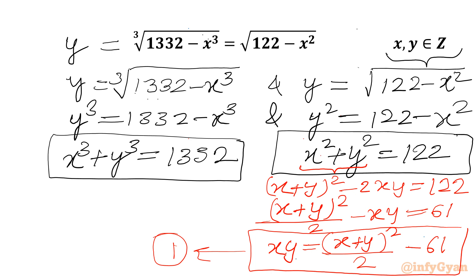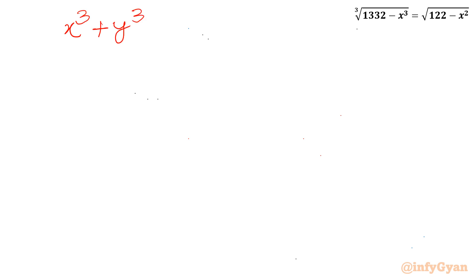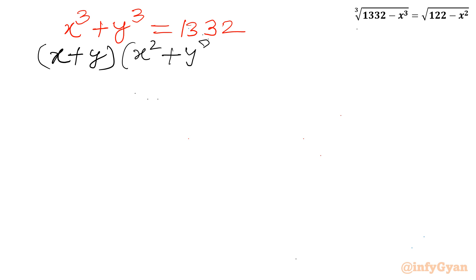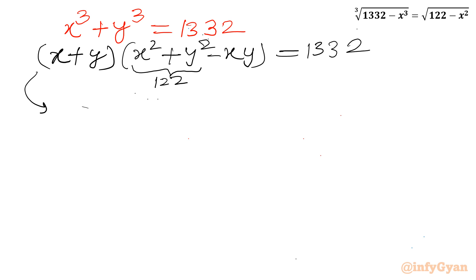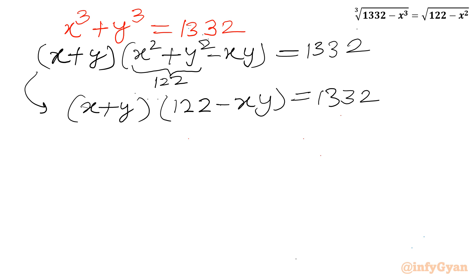Now I will consider x cubed plus y cubed equal to 1332 and apply the a cubed plus b cubed formula on the left-hand side. So we can write (x plus y) times (x squared plus y squared minus xy) equal to 1332. Since x squared plus y squared is 122, we can write (x plus y) times (122 minus xy) equal to 1332.